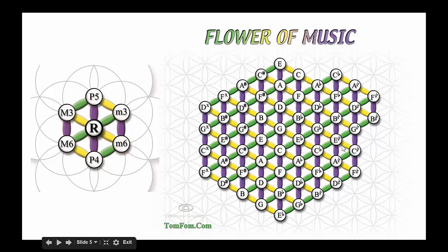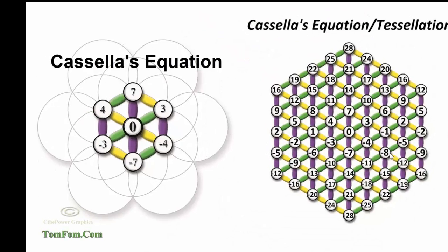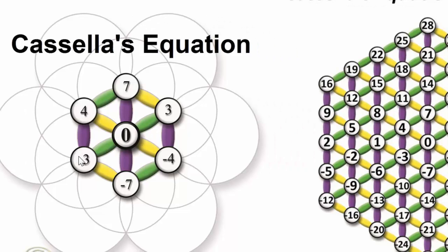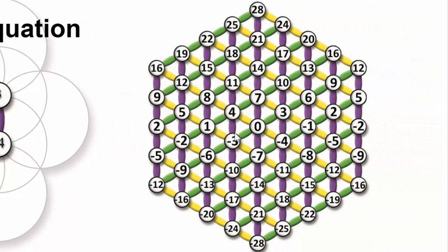The Flower of Music in its building block turn into a numerical array in an equation that equals zero. Everywhere this equation fits into this tessellation, it's always seven up, or four up, or three down, or three up, or seven down.